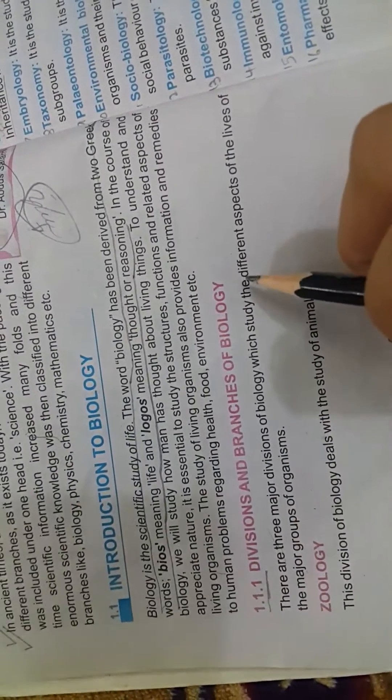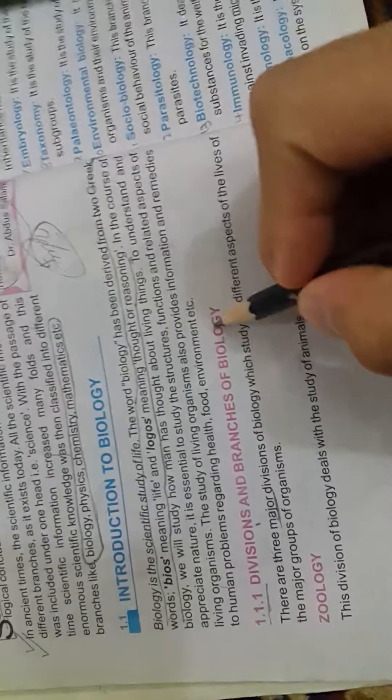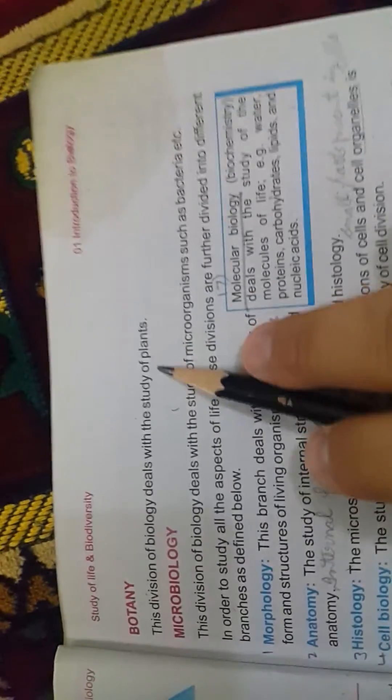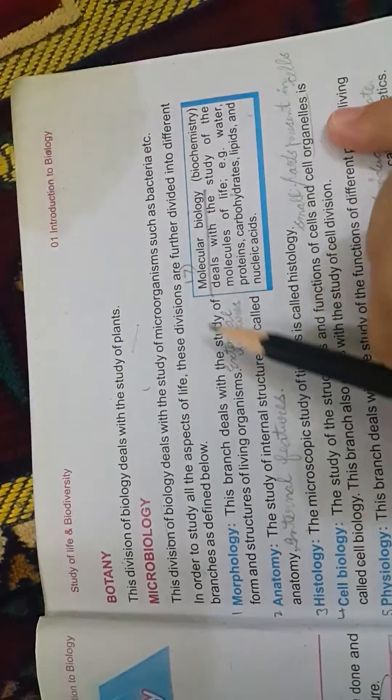The first topic: divisions and branches of biology. There are three major divisions of biology, which are the biggest divisions of science. Divisions of biology: there are three major divisions of biology which study the different aspects of the lives of major groups of organisms. First one is zoology, it deals with the study of animals. Second one is botany, it deals with the study of plants. Third is microbiology, it deals with the study of bacteria and microorganisms. You can just write the meanings.